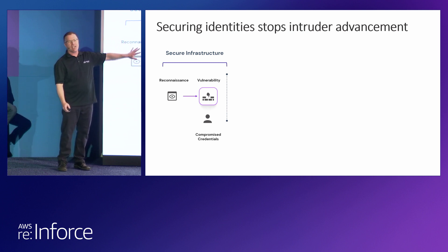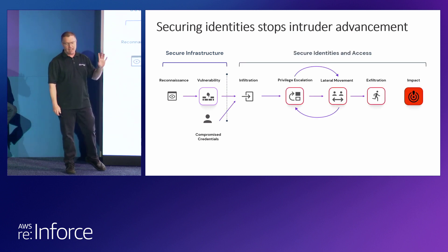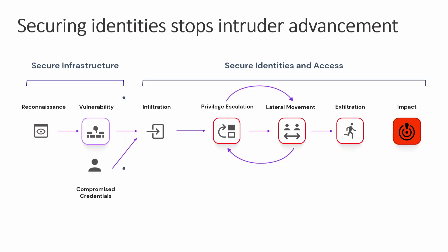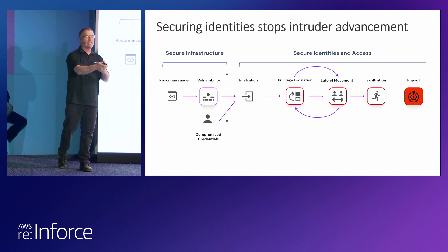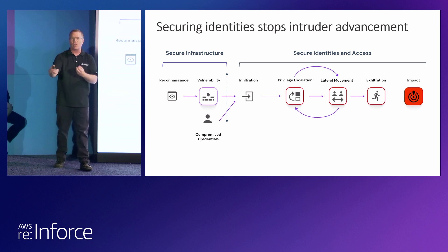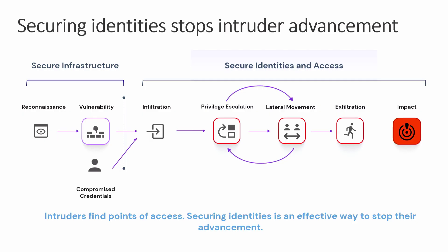We all know intruders get in — they get in in lots of ways. Compromised identity, a vulnerability in an application. What gets really interesting is that after the intruder is in, whether they're a bad actor, an insider, or whatever it is, moving through these cloud accounts is a unique thing in the last five to ten years that generally our security tools weren't looking for as we were risk profiling these accounts. You have these new concepts of assuming another identity and using that identity on your behalf, or launching a workload and using that workload's permissions to do things on your behalf.